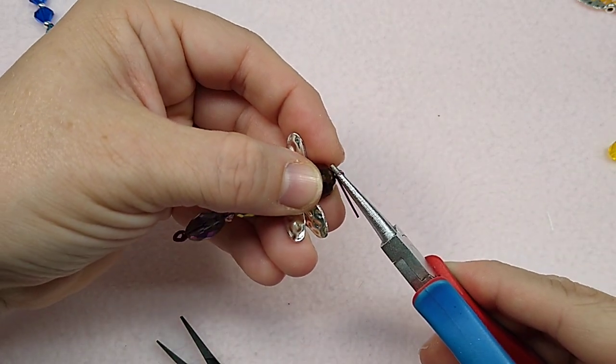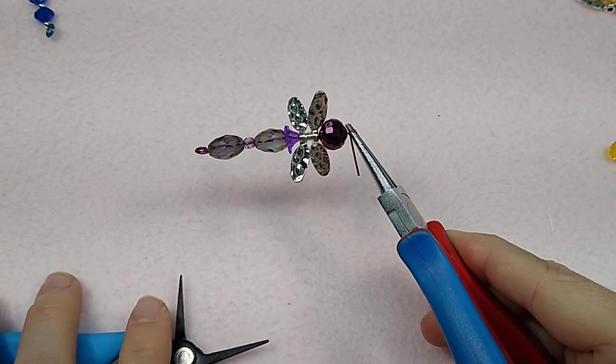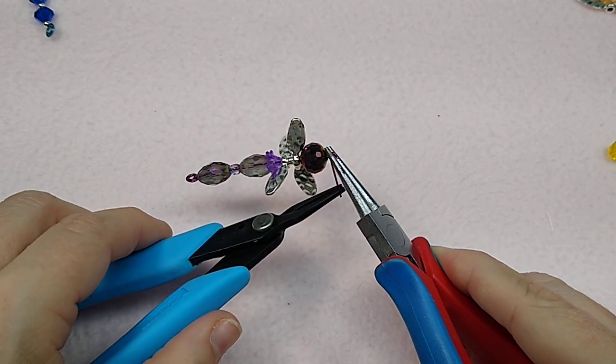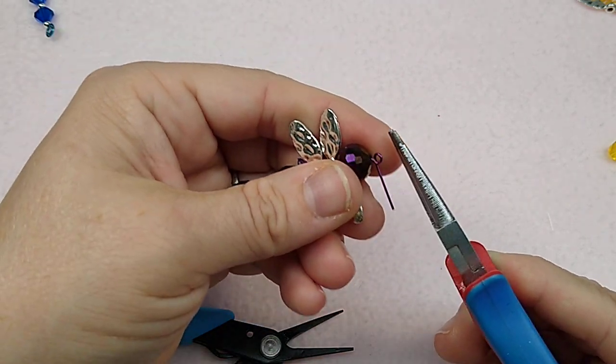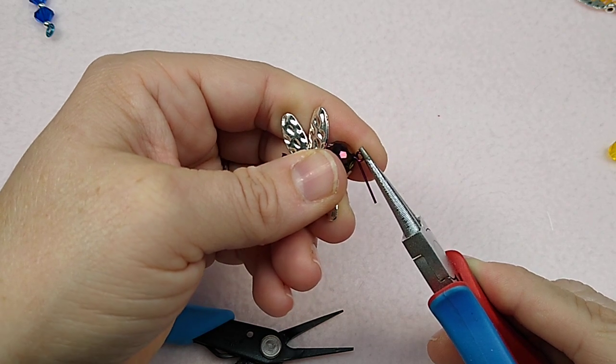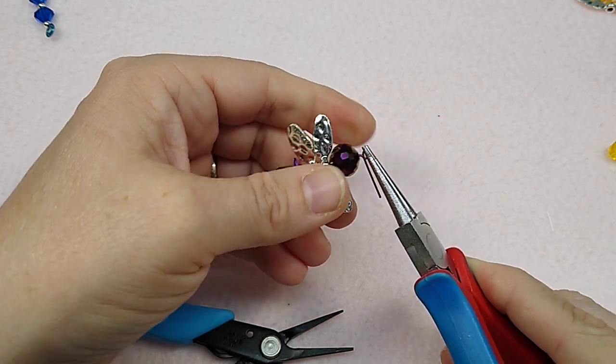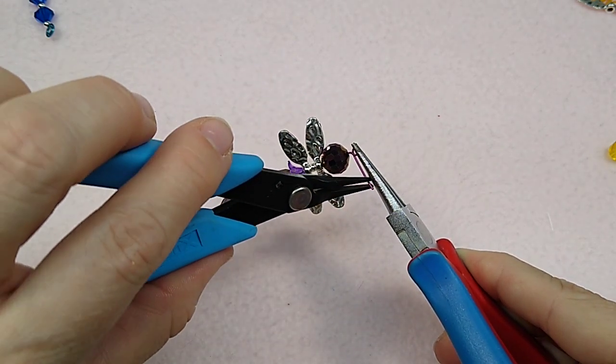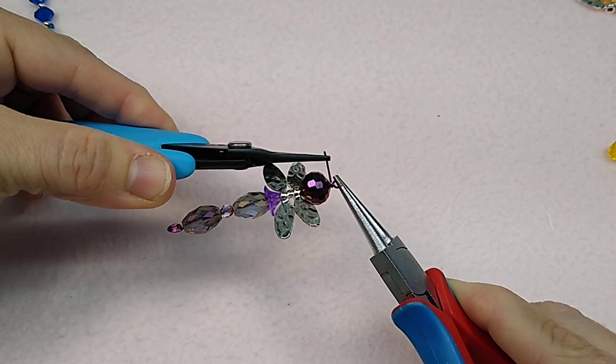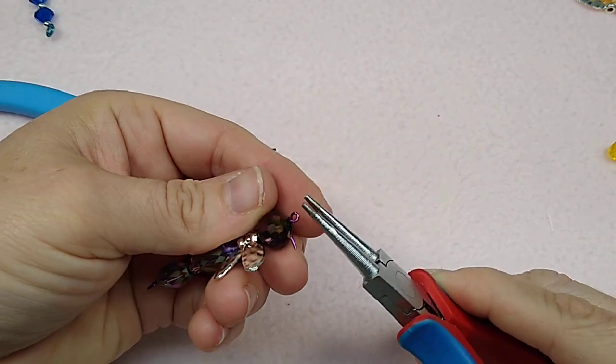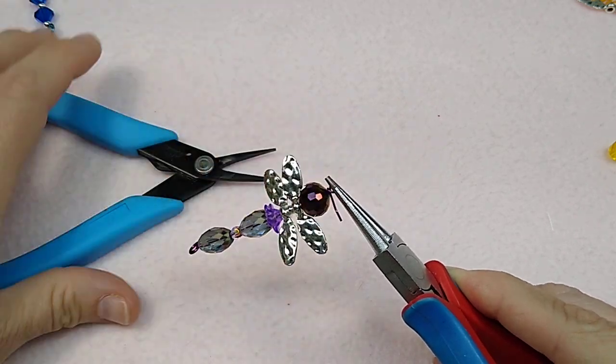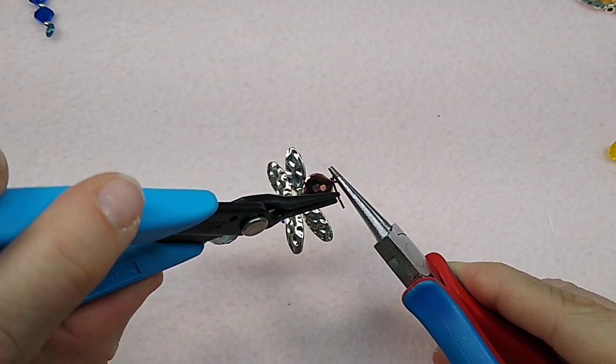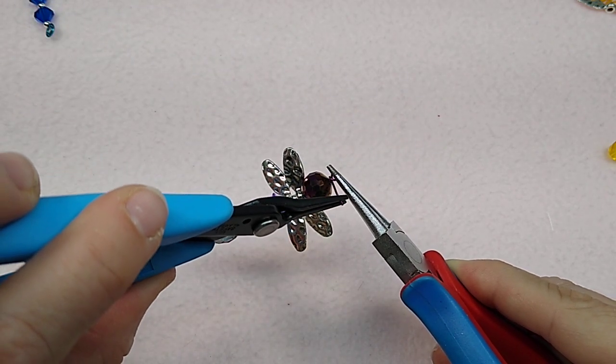Okay. And then I'm going to grab these with my round nose pliers and I'm going to take my chain nose pliers and I'm going to try my best. I'm not the best at wrapped loops guys, but I'm going to try my best to wrap this very neatly, just like this. I turn it and you want to wrap it all the way down to the bead and make it tight if you can.